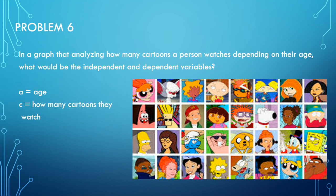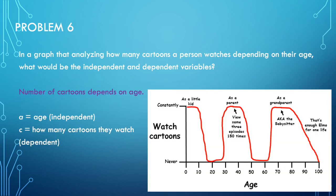Problem six: in a graph that analyzes how many cartoons a person watches depending on their age, what would be the independent and dependent variables? A is age and C is how many cartoons they watch. The number of cartoons depends on the age, so number of cartoons is dependent and age is independent.